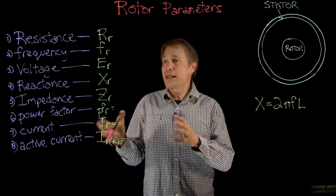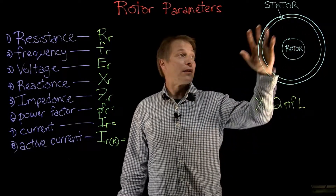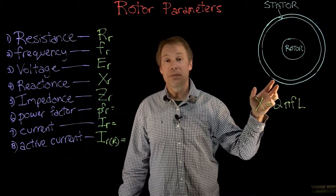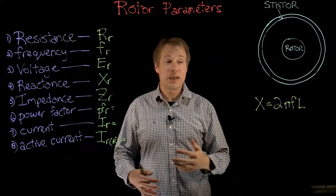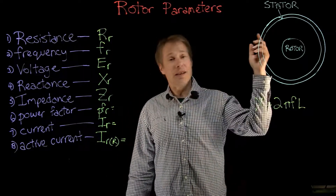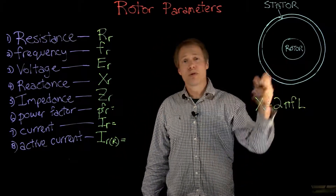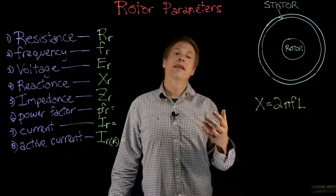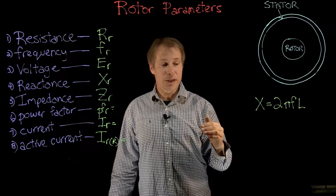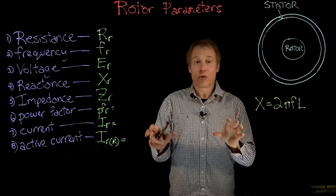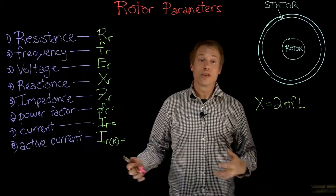Before I get into the thick of things, I want to review a couple of terms. Synchronous speed is the speed of the magnetic field of the stator, measured in RPM. Rotor speed is how fast the rotor is turning, also in RPM. Slip speed is the difference between synchronous speed and rotor speed — another way of thinking about it is how much the rotor is not spinning. Slip is the ratio of slip speed to synchronous speed, and these two are directly proportional to each other.